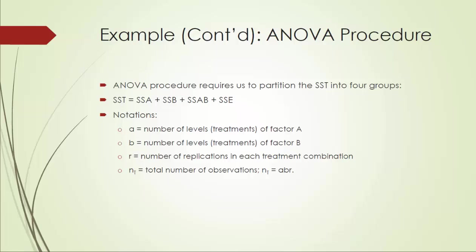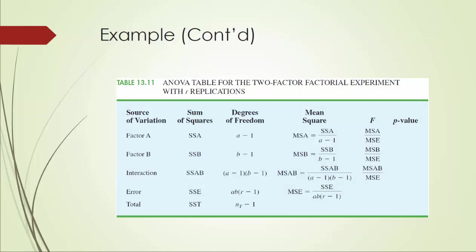Let's take a look at the notation. A is the number of levels or treatments of factor A, B is the number of levels or treatments of factor B, and R is the number of replications in each treatment combination. For convenience, we want the number of replications to be the same across treatment combinations. The total sample size T is the product of A, B, and R. Here we see a two-way ANOVA table with R replications.